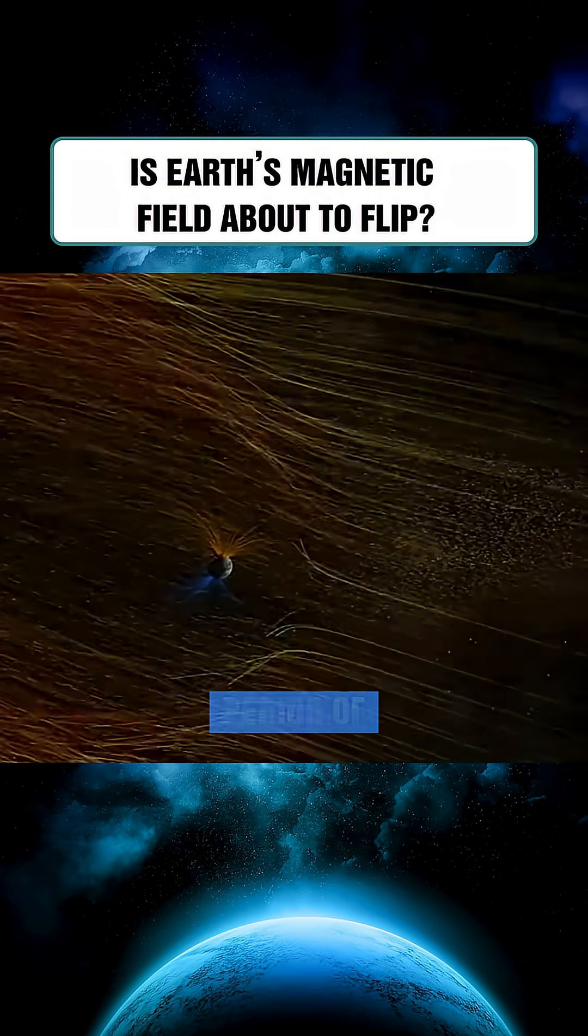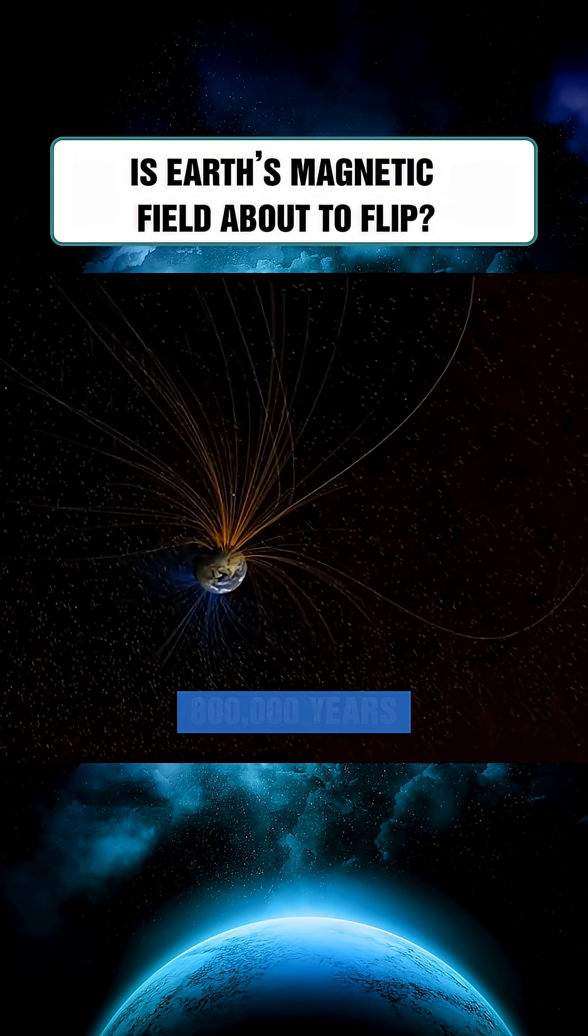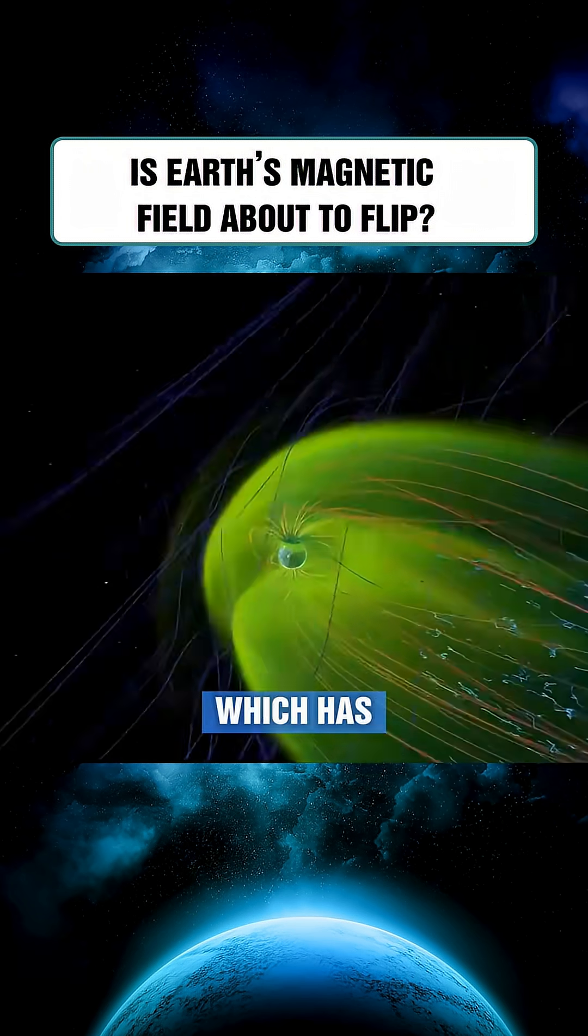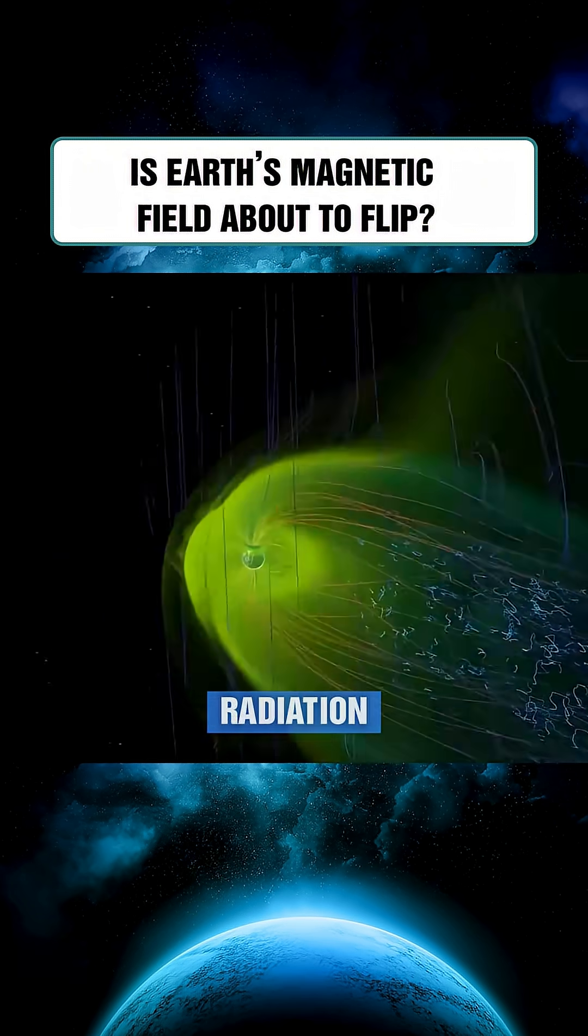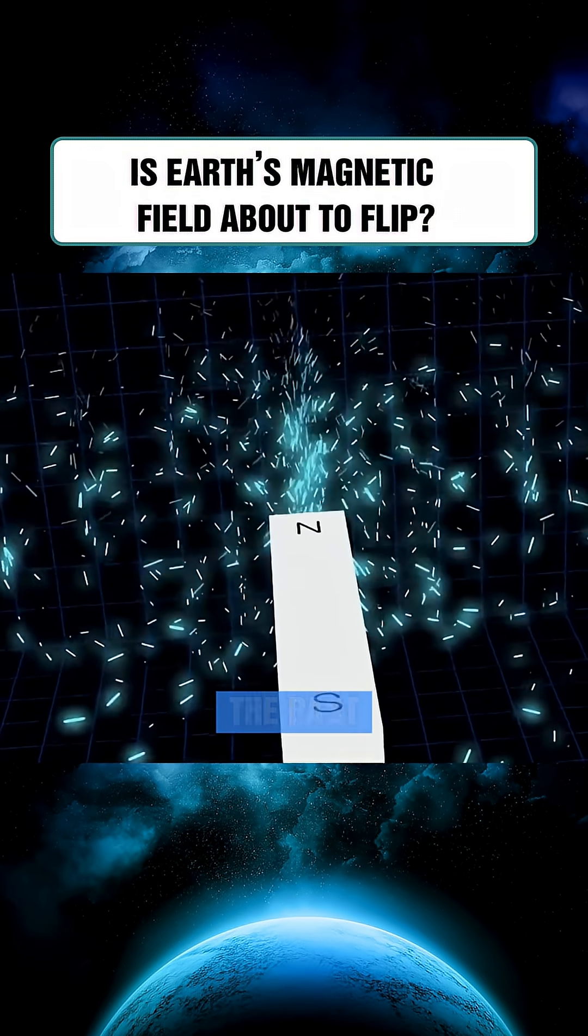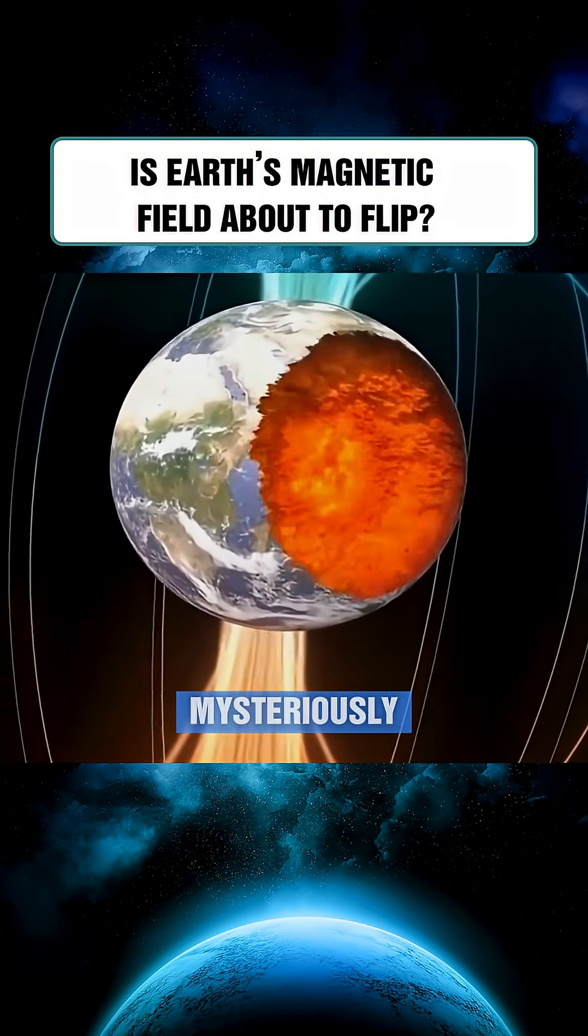We are currently living in the period of the weakest magnetic field Earth has experienced in the past 800,000 years. This protective layer, which has shielded Earth from cosmic radiation for billions of years, has lost about 30% of its strength in just the past 3,000 years, and continues to weaken mysteriously.